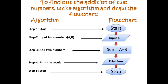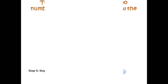Step 5: Stop — use an oval shape. That is the algorithm and flowchart to find the addition of two numbers. Remember, use only three shapes: oval shape for start and stop; parallelogram shape for input and output — unknown values like X, Y, Z or A, B, C can be used as you wish; and rectangle shape for the processing box for any formula-based question.